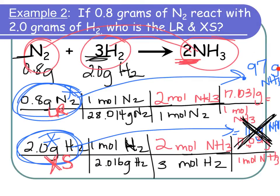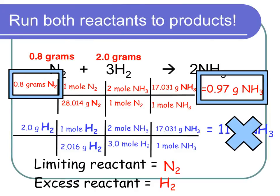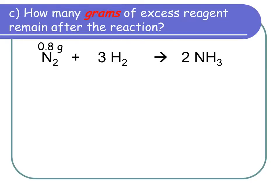Label the 0.97 grams as the product formed from the limiting reactant. If they give us moles we give moles back; if they give us grams we give grams back. The answer to Part B is 0.97 grams of ammonia formed.